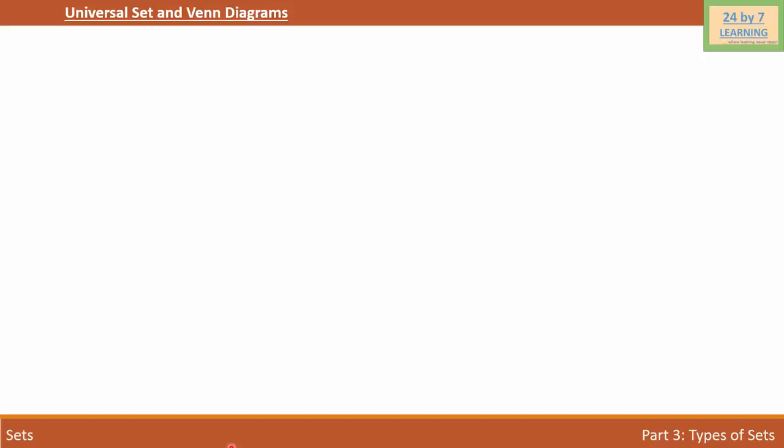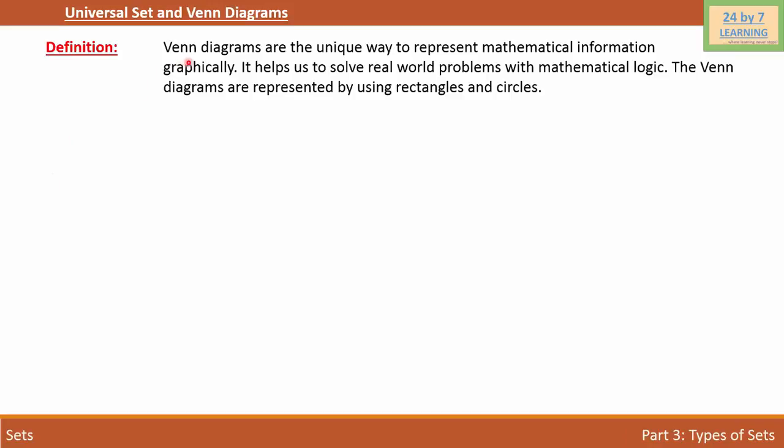Let's first consider the definition of Venn Diagrams. Venn Diagrams are the unique way to represent mathematical information graphically. It helps us to solve real-world problems with mathematical logic. The Venn Diagrams are represented by using rectangles and circles.